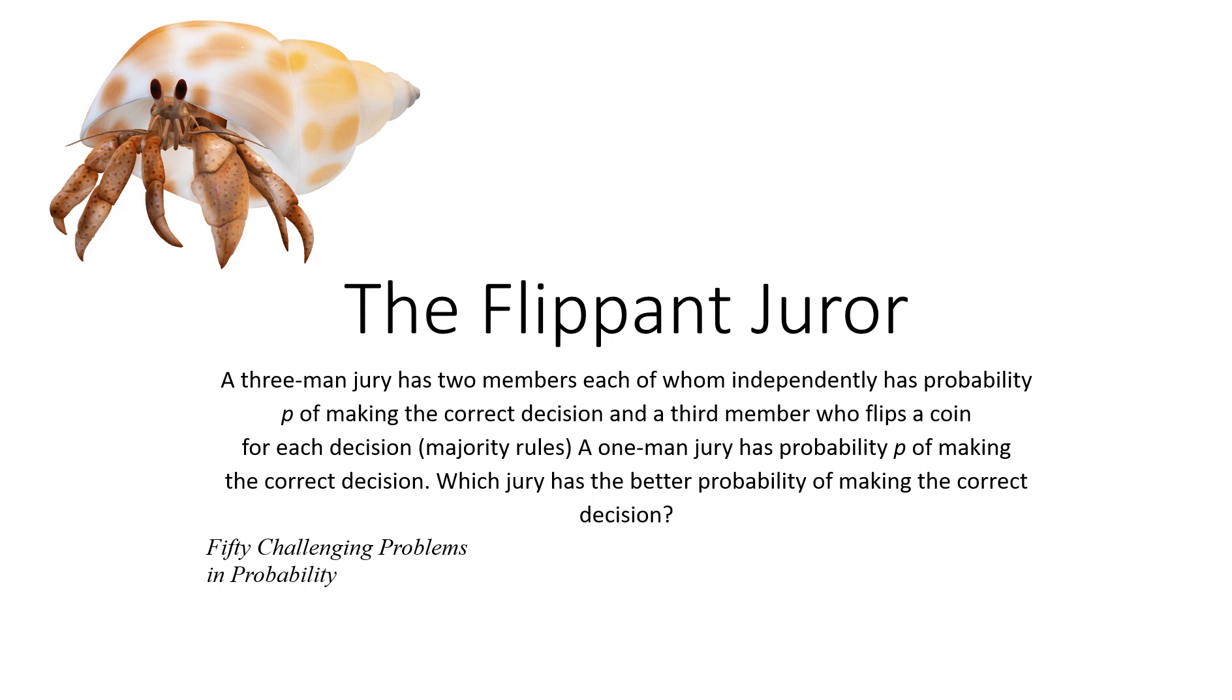A three-man jury has two members, each of whom independently has probability p of making the correct decision, and a third member who flips a coin for each decision. Majority rules - if two of them have the same decision, then this is the result. A one-man jury has probability p of making a decision. Which jury has the better probability of making the correct decision?